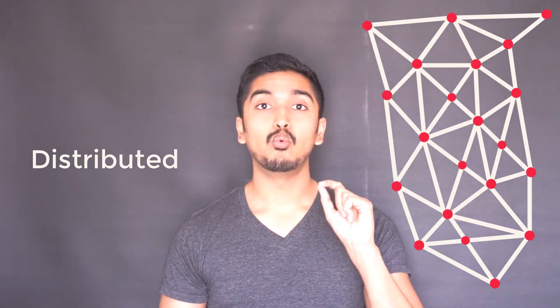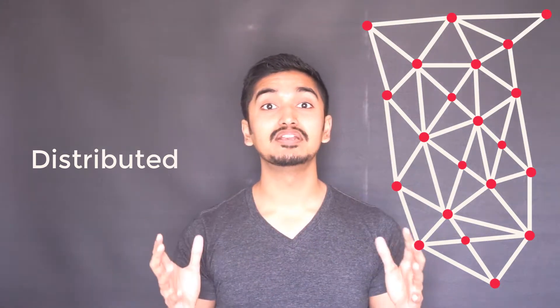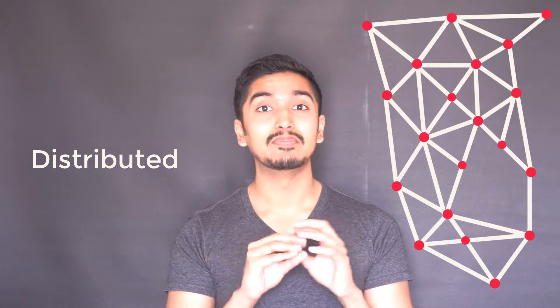Distributed, on the other hand, is if one node goes down — because there are so many different connections — if one node goes down, then everything else pretty much stays alive. Or a cluster of it maybe will go away, but everything else will still be alive.